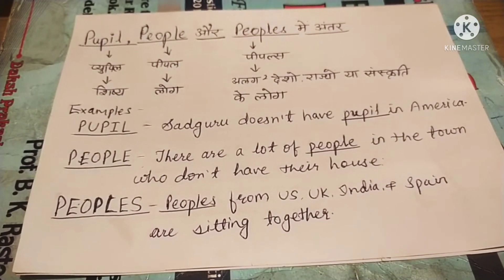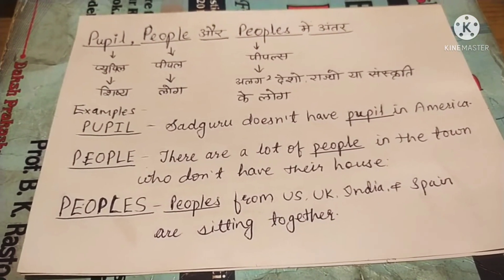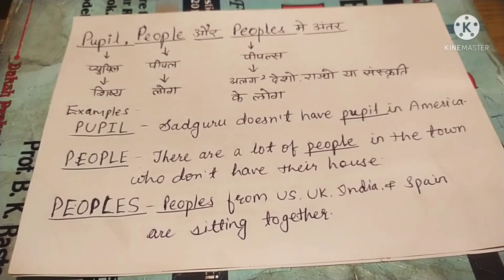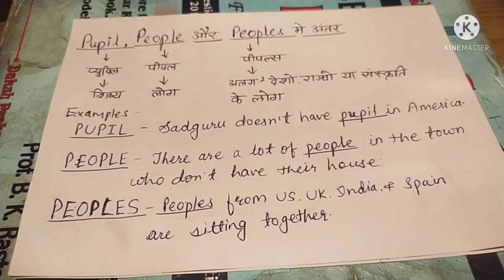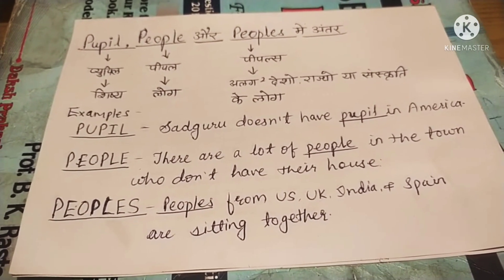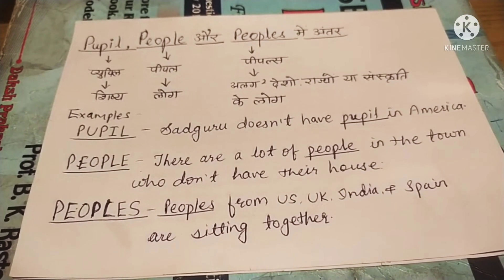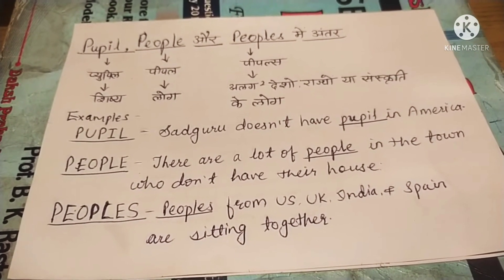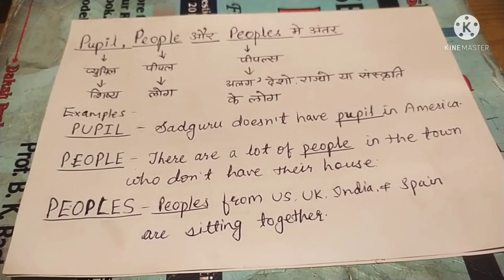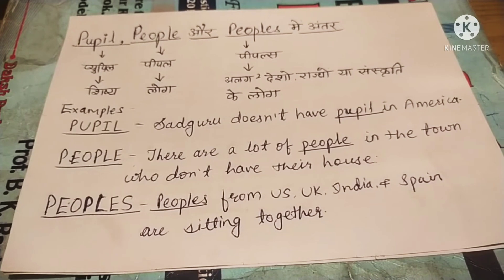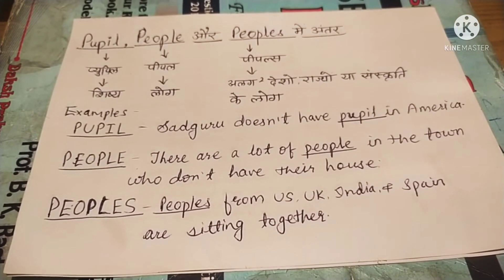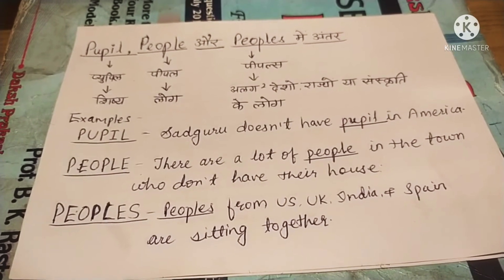The first spelling is pupil: P-U-P-I-L. The second spelling is people: P-E-O-P-L-E — people. And the third spelling is peoples: P-E-O-P-L-E-S — peoples. So peoples ka matlab hota hai — let's look at what confusing hota hai in these three words.